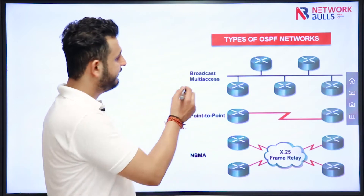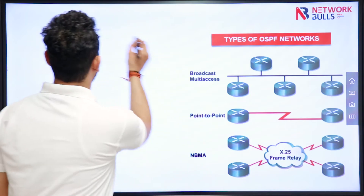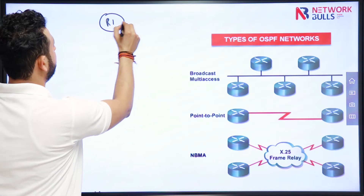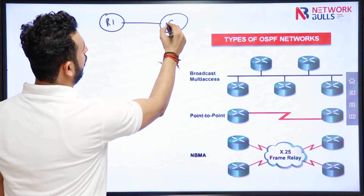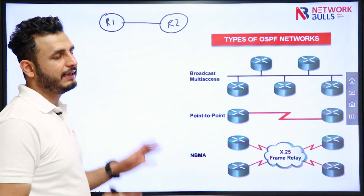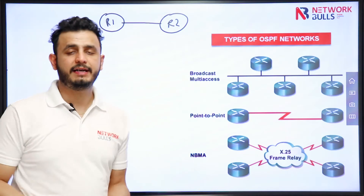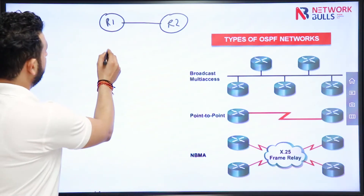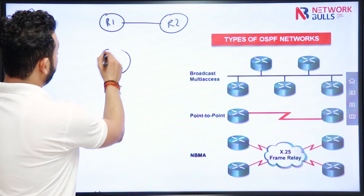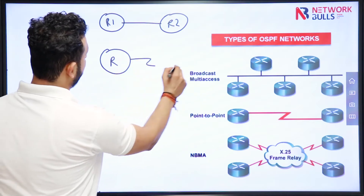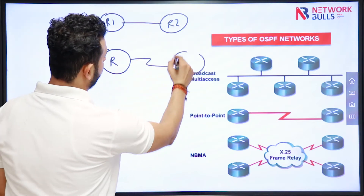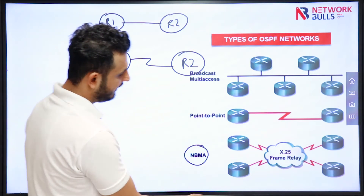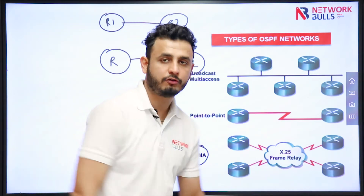Let me give you an example. Let's say two routers are connected by an Ethernet link. Ethernet is a multi-access type of media on which you can connect two or more devices. The second example is two routers connected by a serial link. Serial is a point-to-point link, and lastly we have NBMA networks like Frame Relay and X.25.